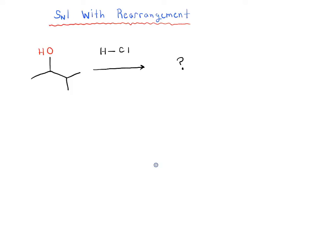In previous videos, we've talked about SN1 reactions, and we've also talked about rearrangement reactions. In this video, we're going to talk about SN1 reactions that occur with rearrangement, giving one example of this reaction. Knowing what you know about SN1 and rearrangement reactions, see if you can apply those concepts together to find what the product of this reaction would be.